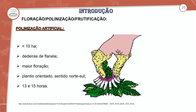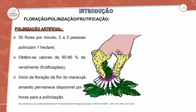Em produções dentro de estufas ou no processo mecânico de fecundação da flor através de métodos artificiais, a caracterização do processo de fecundação artificial prevê no mínimo 50 flores por minuto, onde 2 a 3 pessoas conseguem polinizar 1 hectare. Obtém-se um valor de 60 a 80% do rendimento da frutificação. Tem que tomar muito cuidado para evitar a autofecundação e não quebrar a antera ou o estame, pois alterar uma estrutura do aparelho reprodutor pode inviabilizar o processo.